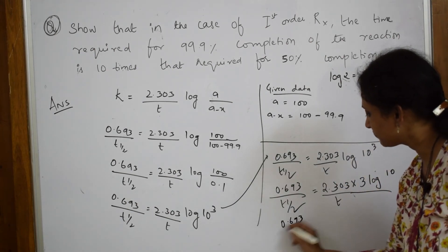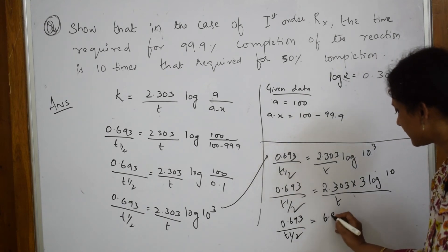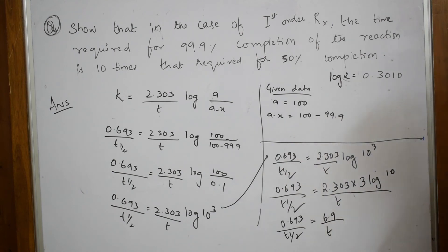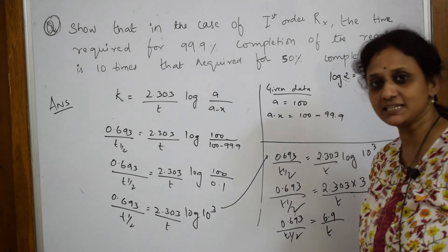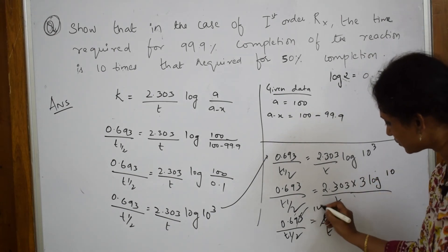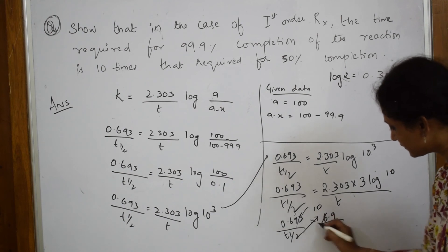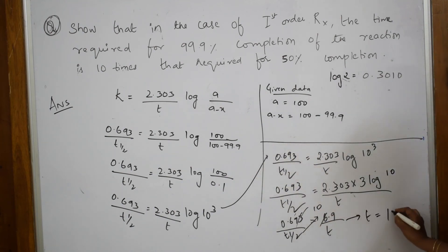I'm going to write this equation as 0.693/t_half = 2.303/t. I can write log(10^3) as 3·log(10). This value is 1. Log 10 is 1, so leave it. Now multiply these two: 0.693/t_half = 6.909/t. When you cancel, 10 times. Cross multiply this equation: t = 10·t_half. Done.